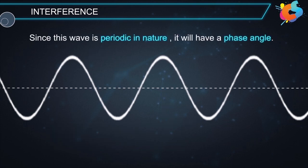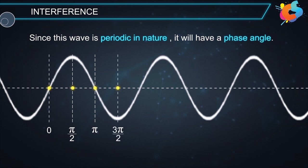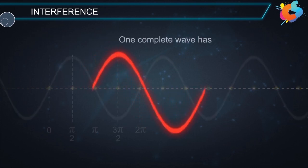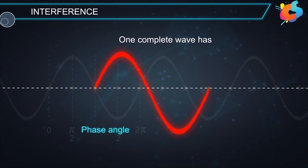Since this wave is periodic in nature, it will have a phase angle. The phase angle at this point is zero, this point is π/2, this point is π, this point is 3π/2, and this point is 2π and so on. Therefore, we can say that one complete wave will have a phase angle of 2π.